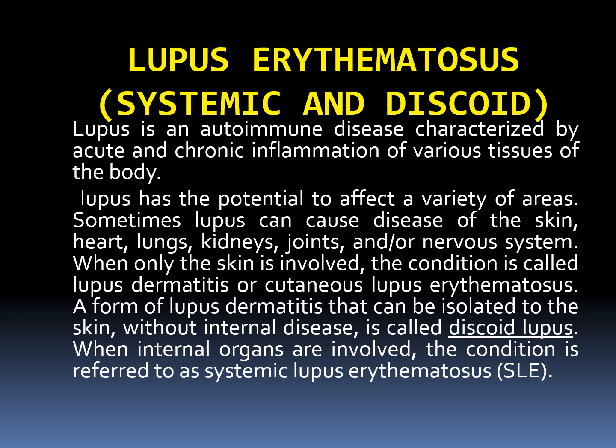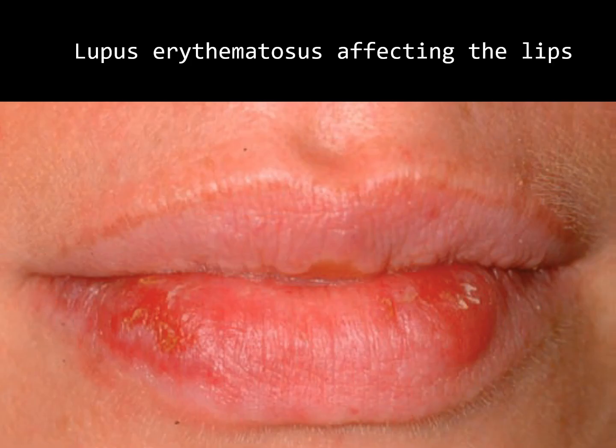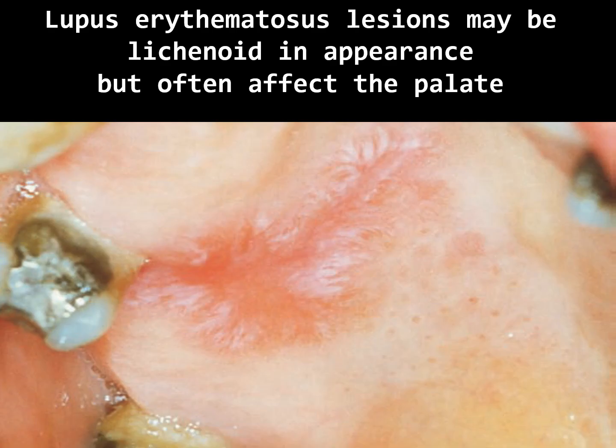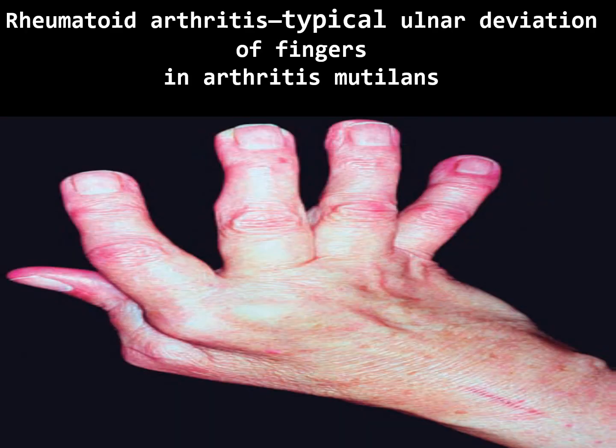When only the skin is involved, the condition is called lupus dermatitis or cutaneous lupus erythematosus. A form isolated to the skin without internal disease is called discoid lupus. When internal organs are involved, the condition is referred to as systemic lupus erythematosus (SLE). Lupus lesions may be lichenoid in appearance but often affect the palate, resembling lichenoid lesions with a white brush-bordered erosion.